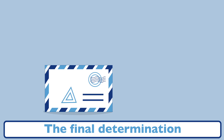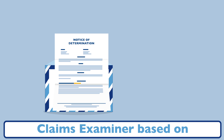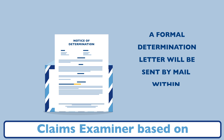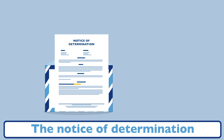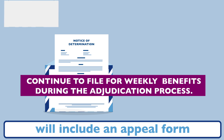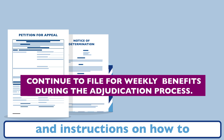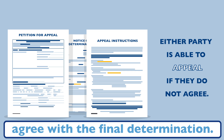The final determination will be made by a UC claims examiner based on the information provided. The notice of determination will include an appeal form and instructions on how to appeal if either party does not agree with the final determination.